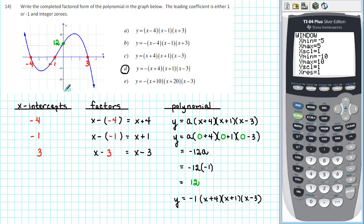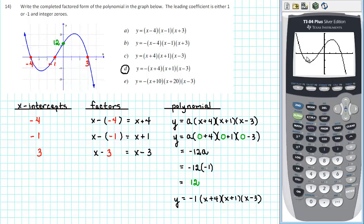We see that the y values range from negative 30 to 30 with a scale of 10. So we enter negative 30 for y minimum, 30 for y maximum, and 10 for the y scale. Finally, we go to graph, and we see that the graph on the calculator screen matches the graph that's given. We have x-intercepts at negative 4, negative 1, and 3, and a y-intercept at 12.